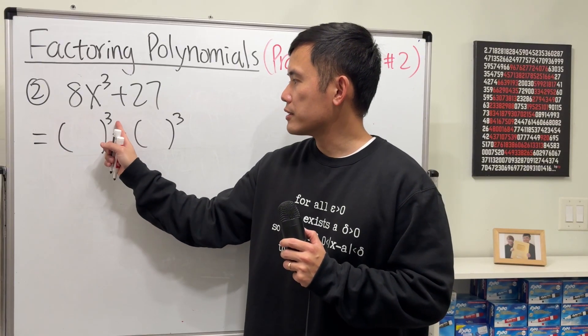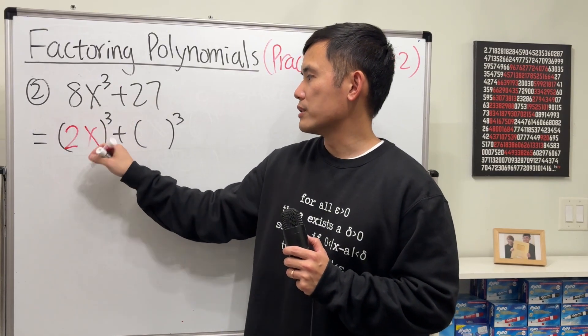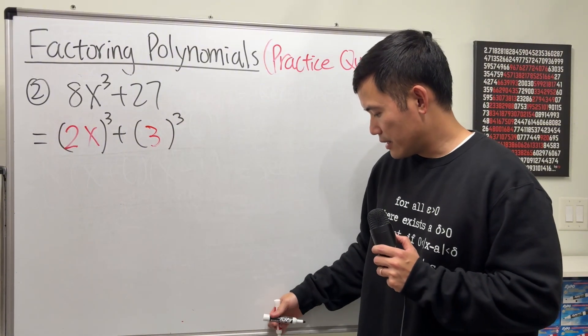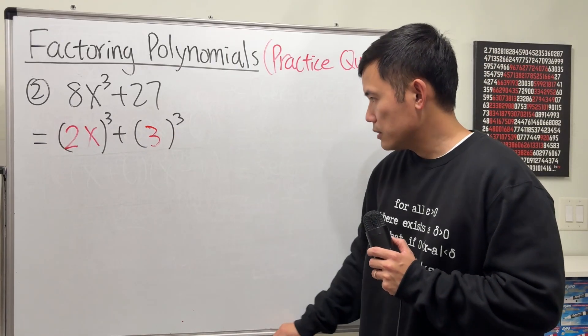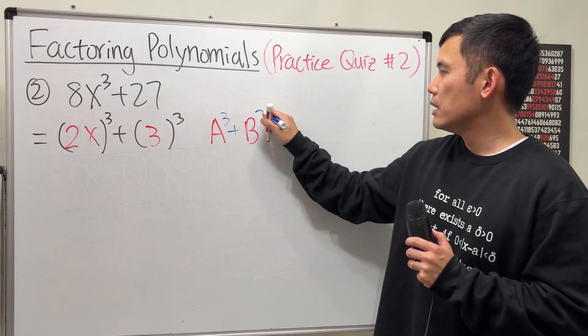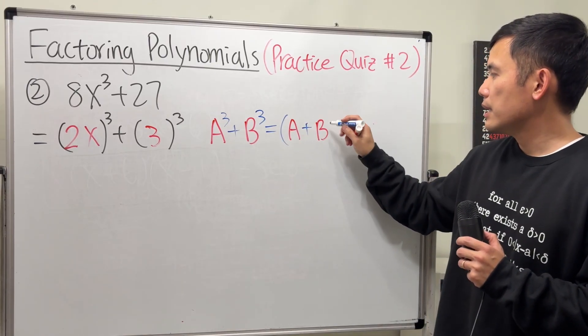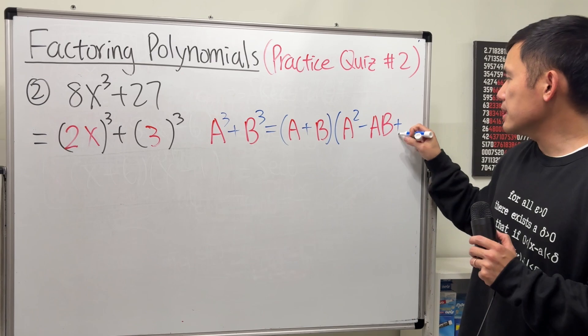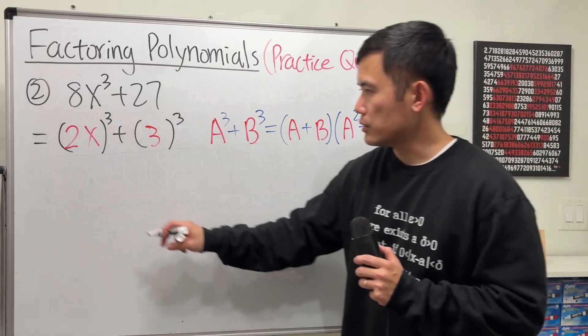First, we will have to ask ourselves: what to the third power will give us 8? And the answer for that is 2. And then x to the third power, we of course need the x. For the 27, we need 3. 3 to the third power gives us 27. From here, we will have to remember the formula for factoring a sum of two cubes. And I'm going to write that down right here for you guys. Now with this formula, we can just go ahead and use it.